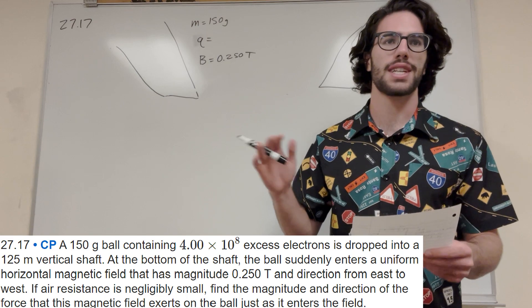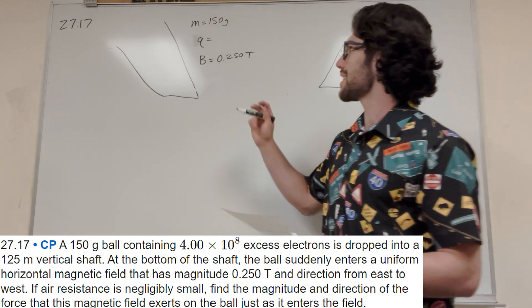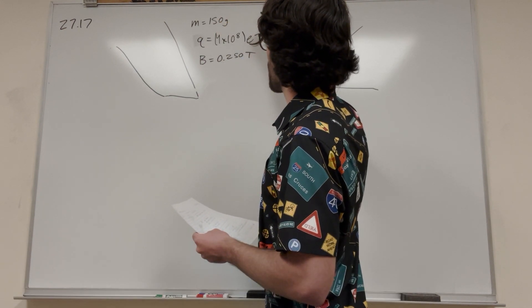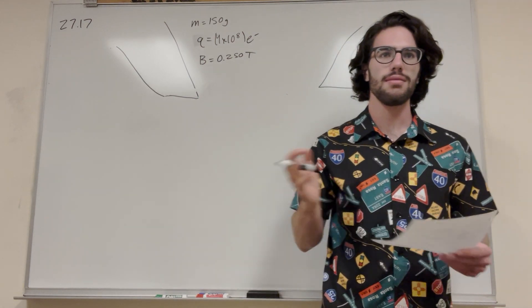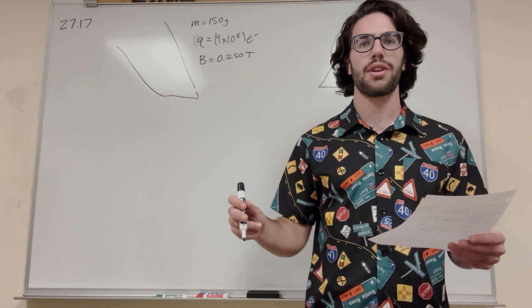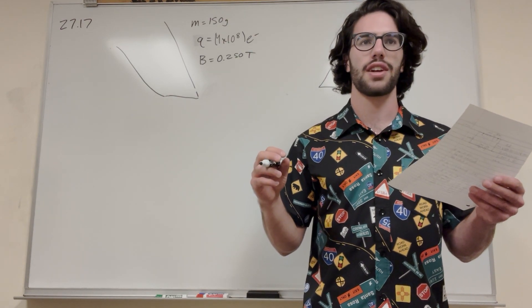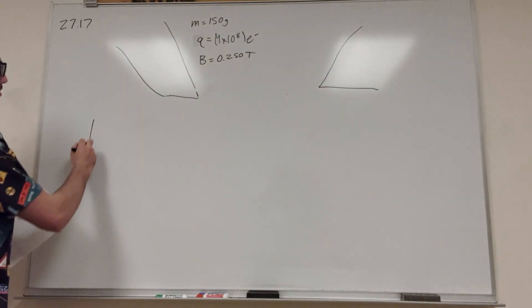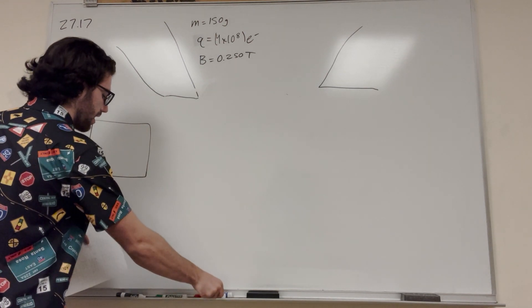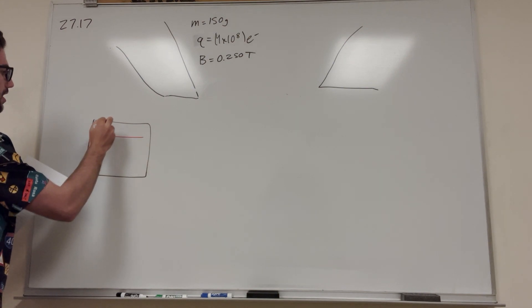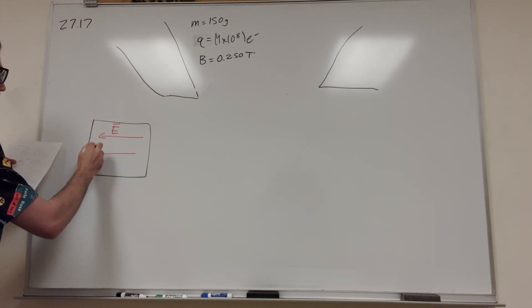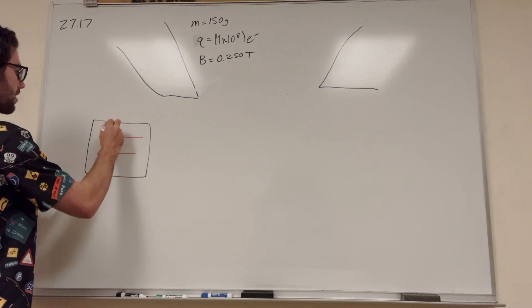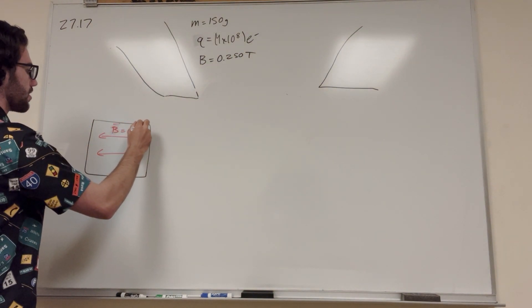So it says we have 4 times 10 to the 8 excess electrons. So let's go ahead and write down that Q is equal to 4 times 10 to the 8, but then multiplied by the charge of an electron. So we're going to label that e minus. So then at the bottom of the shaft, it falls 125 feet, and then at the bottom of the shaft, it enters a magnetic field of 0.25 Teslas from east to west. So let's draw that. So let's just pretend that this is the bottom of our field. And then so it goes from east to west, right? So our magnetic field B goes from east to west. And we said earlier it's equal to 0.25 Teslas.